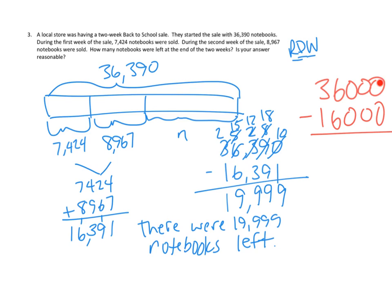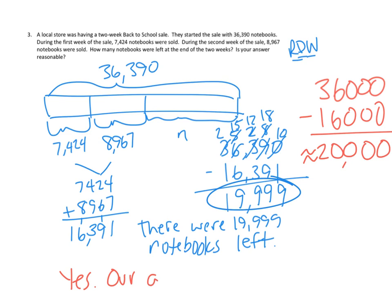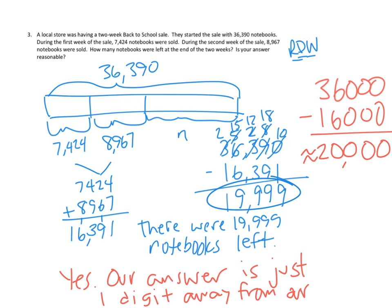Can we do our subtraction here? Enough ones, tens, hundreds, thousands, ten-thousands? Yes. Zero minus zero is zero, zero minus zero is zero, zero minus zero is zero, six minus six is zero, three minus two is one — that's about 20,000. Hey, look at our answer: 19,999. Not only was our estimate pretty close, it was within one. So yes, our answer is reasonable — just one digit away from our estimate.